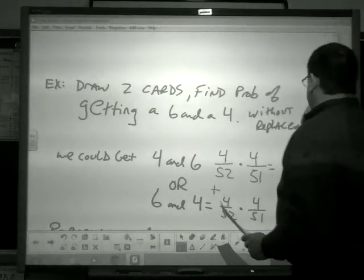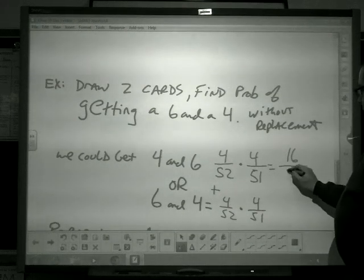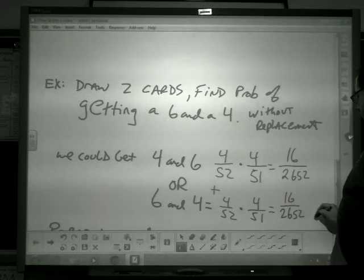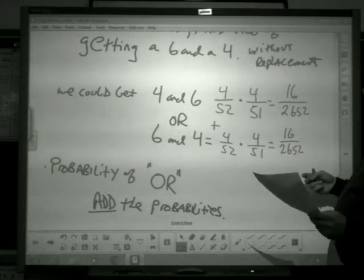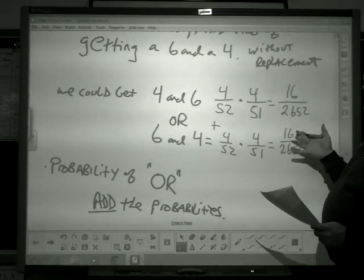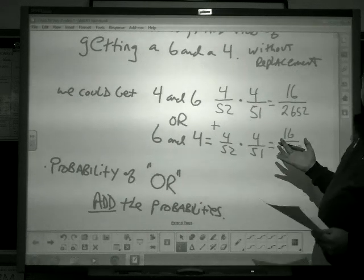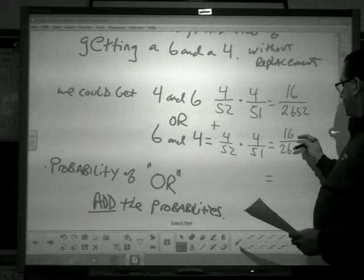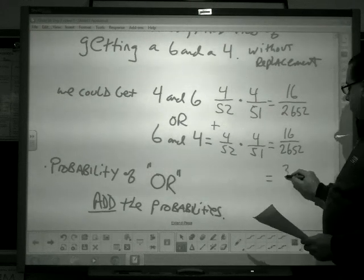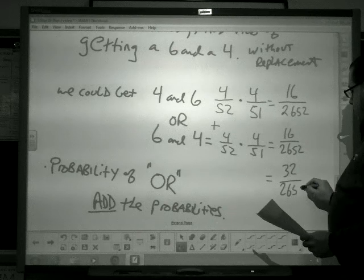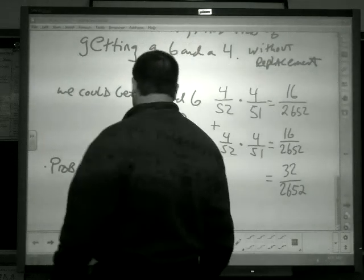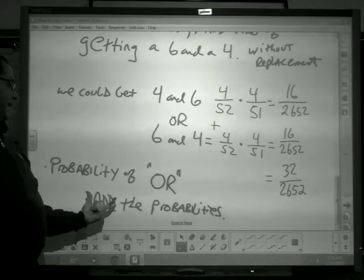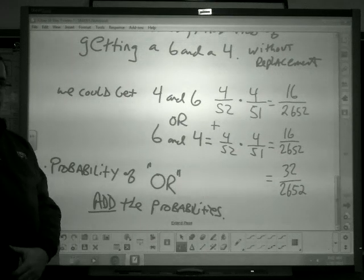We have those two independent probabilities happening, this one or this one, and we're going to add them together. This is four times four is 16 out of 2652. This again is 16 out of 2652. We can keep them as fractions or convert them to decimals. If you convert to decimals, be careful with the rounding directions. If it's multiple choice, a lot of times you'll see them as fractions. 16 plus 16 is 32 out of 2652. So if I have the probability of something happening or something else happening, we need to add those probabilities together.